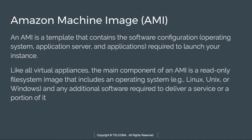Now let's discuss Amazon Machine Image, or AMI. It basically defines the initial software that will be on an instance when it is launched. AMI defines every aspect of the software state at instance launch, including the operating system and its configuration, initial state of any patches, applications, or system software. It is a template that contains software configurations required to launch an instance.